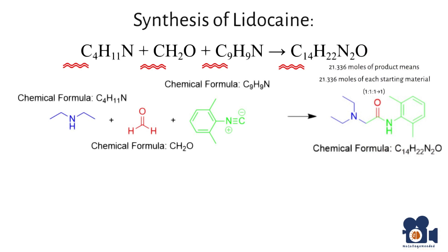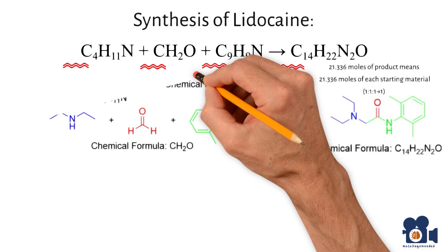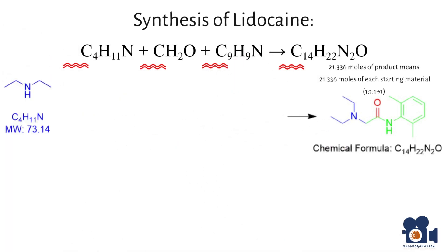Then you convert these moles to grams using the molecular weight. By now you know how to calculate molecular weight, so I won't show you that again. I'll just give it for each starting material: 73.14 grams per mole in C4H11N, 30.03 grams per mole in CH2O, and 131.18 grams per mole in C9H9N.